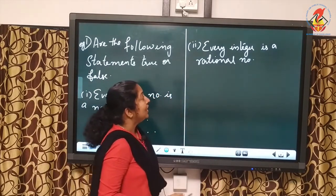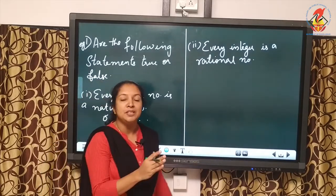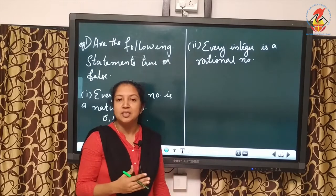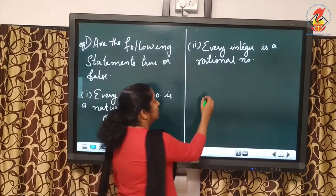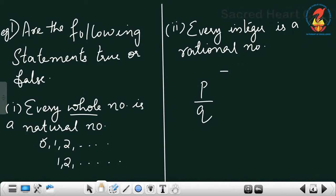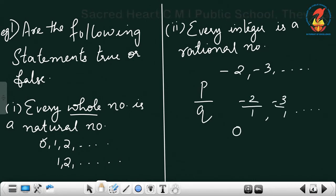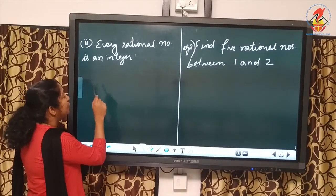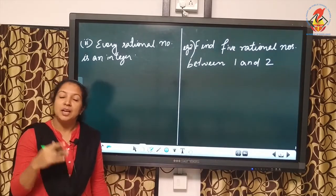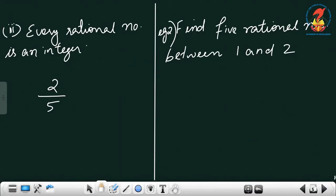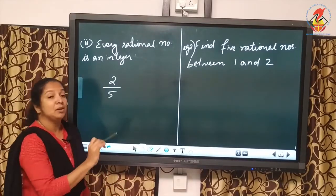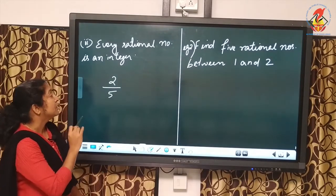Second: every integer is a rational number. Integers include positive numbers, negative numbers, and 0. We can write any integer in the form p/q — for example, -2 as -2/1, -3 as -3/1, 0 as 0/1, and 1 as 1/1. So this statement is correct. Third: every rational number is an integer — this is false, because a number like 2/5 is a rational number but not an integer.